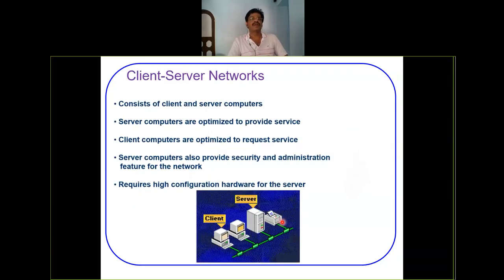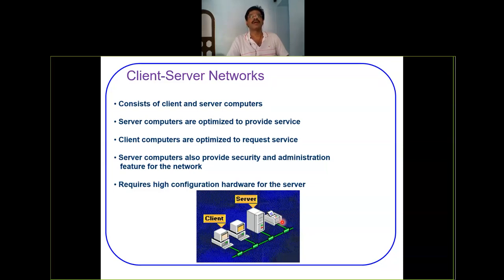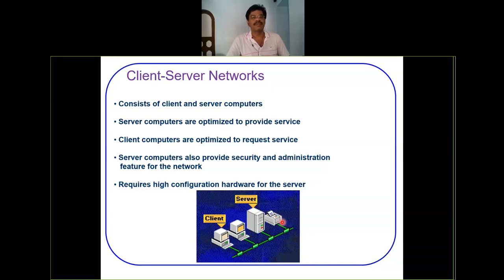The advent of client-server networks introduced specialized server computers optimized to provide services, while client computers are optimized to request services. In peer-to-peer, every terminal is both a client and a server since they both request and provide information. But in client-server networks, there are separate dedicated server computers that provide the service and separate client computers that request it.